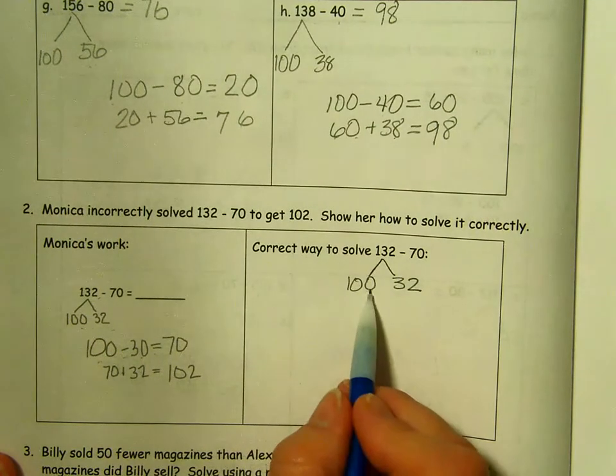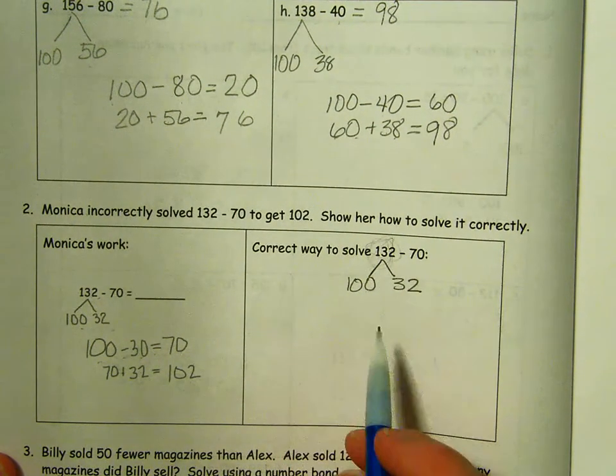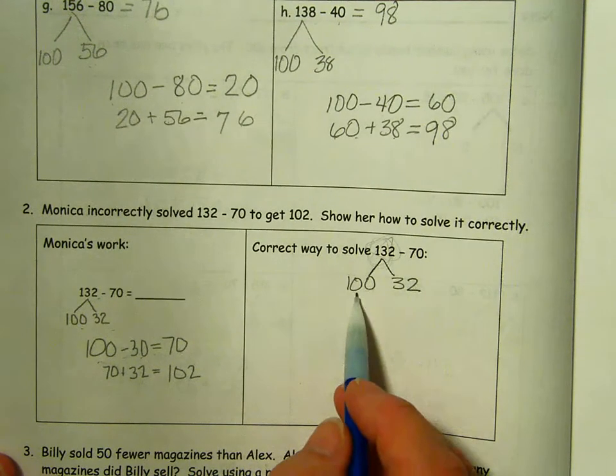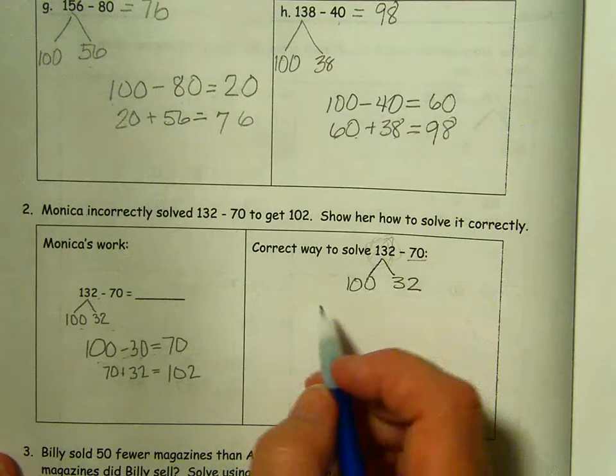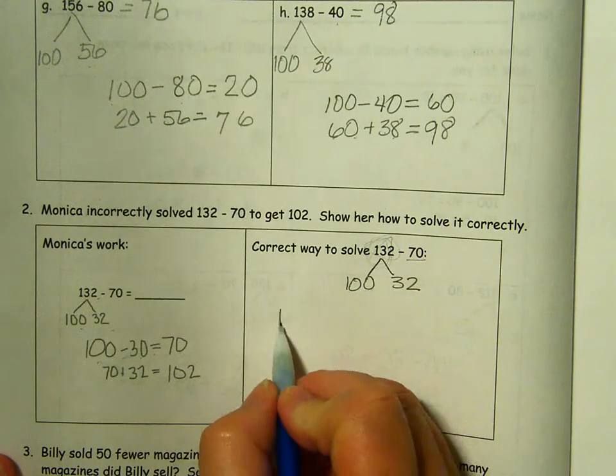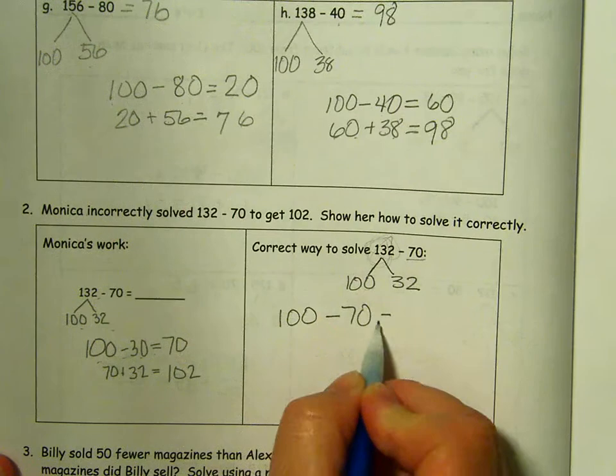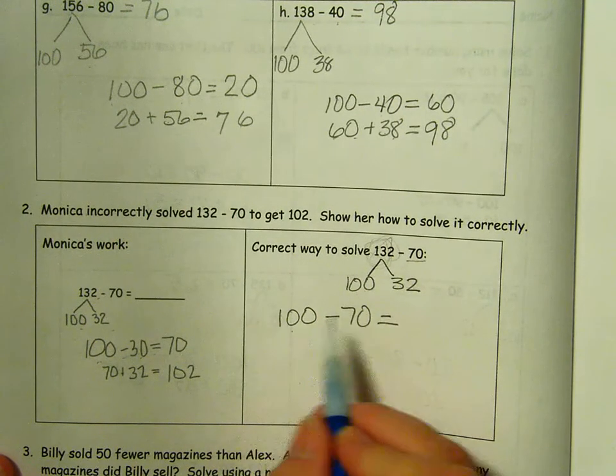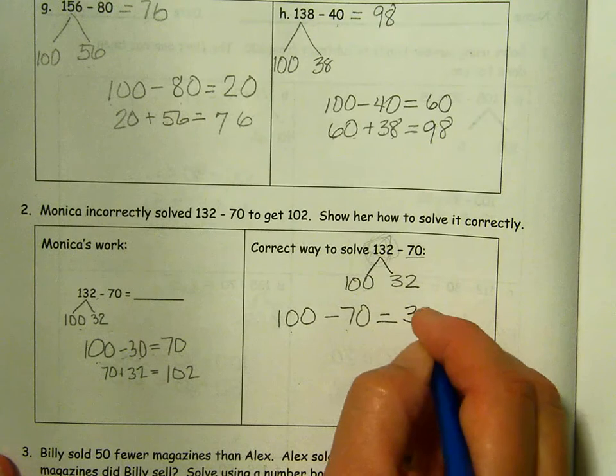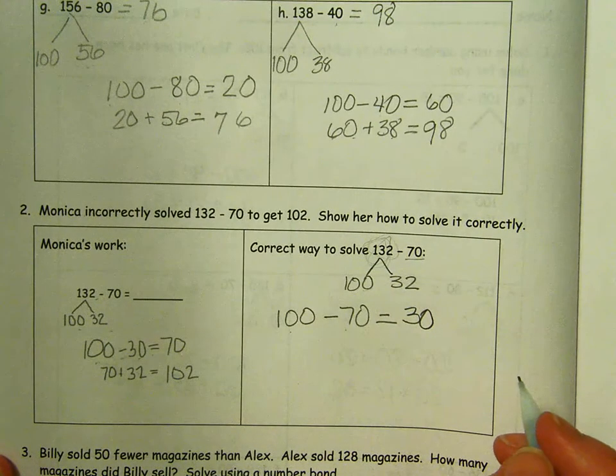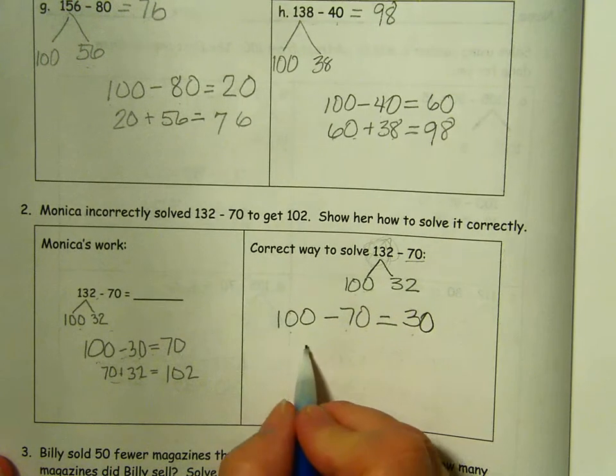Then she said 100 minus 30 equals 70. What are we supposed to take away from the whole there? What are we taking away? We broke it into 132, but we need to take away 70. That's where she made her mistake. So then it's not 70 that you're adding to 32.